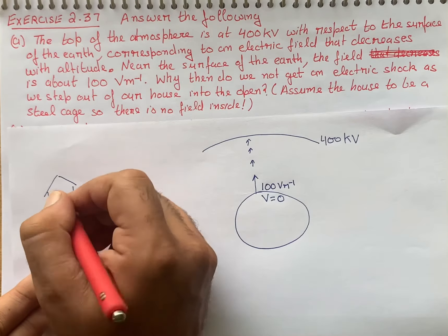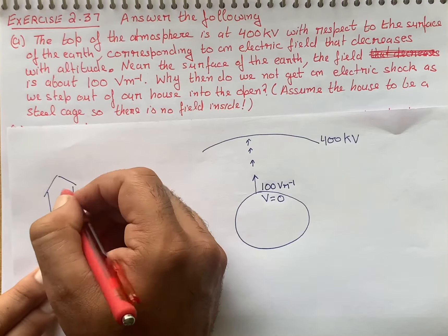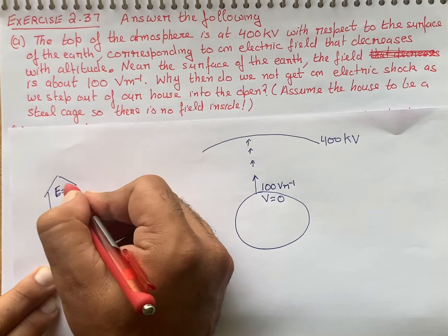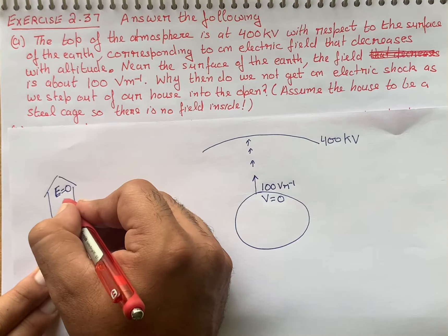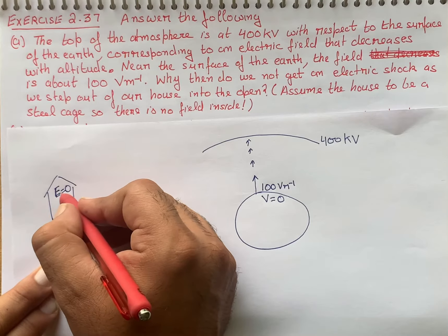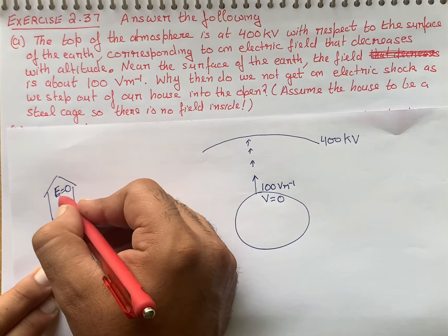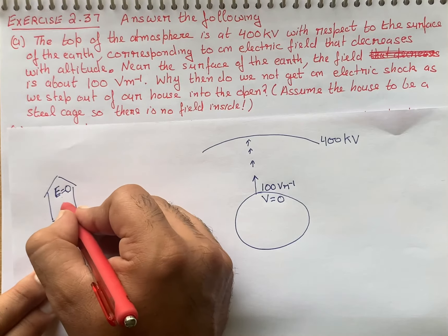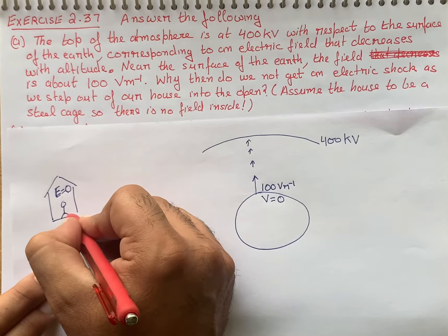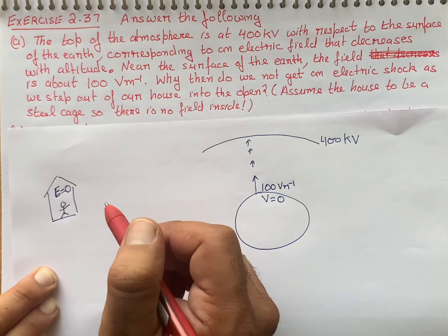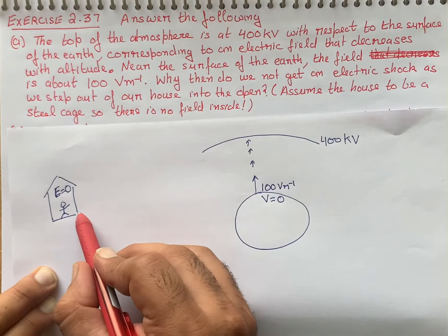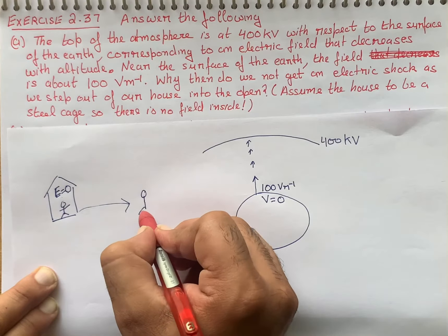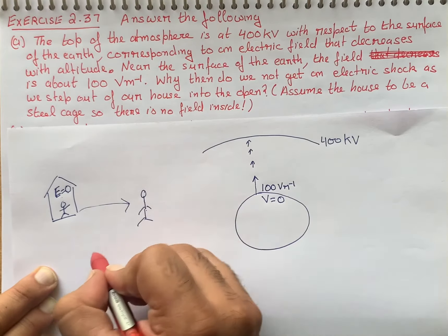Corresponding to an electrical field that decreases with altitude — to kehna hai ki humare paas ek electrical field hai jo altitude, matlab height badhne ke saath decrease karta jata hai. So near the surface of earth, field is about 100 volt per meter. Toh electrical field ki value near the earth surface is about 100 volt per meter. Jaisa hum height mein jaate jayenge, altitude badhta jayega, toh electrical field ki value kam hoti jayegi.